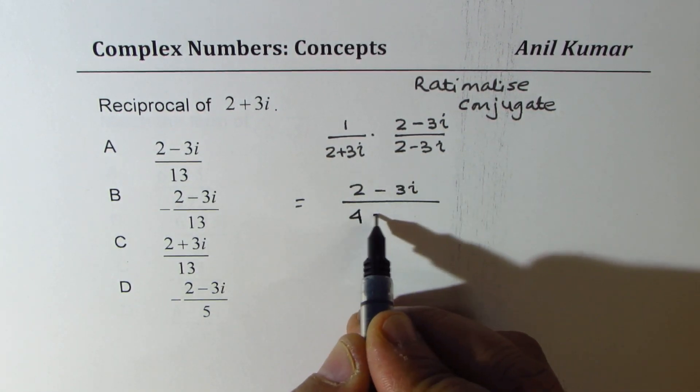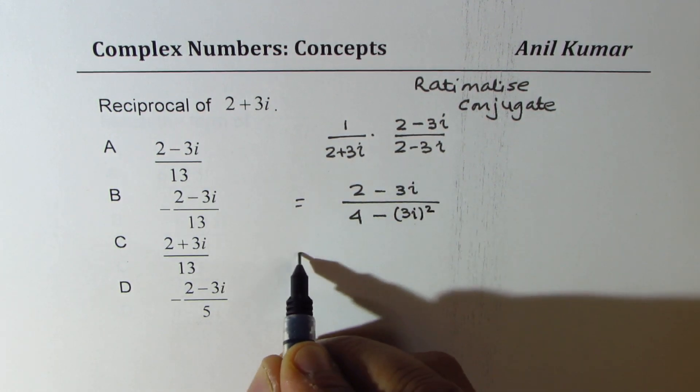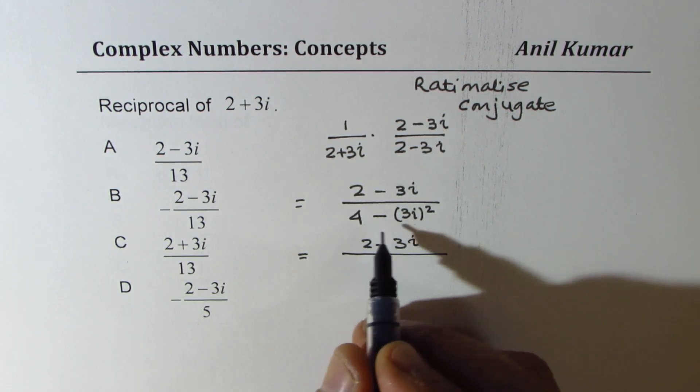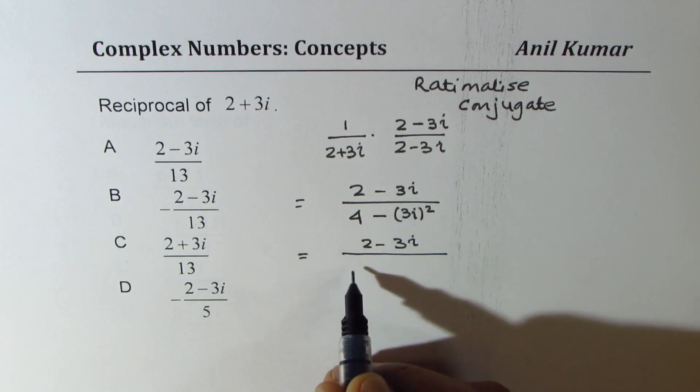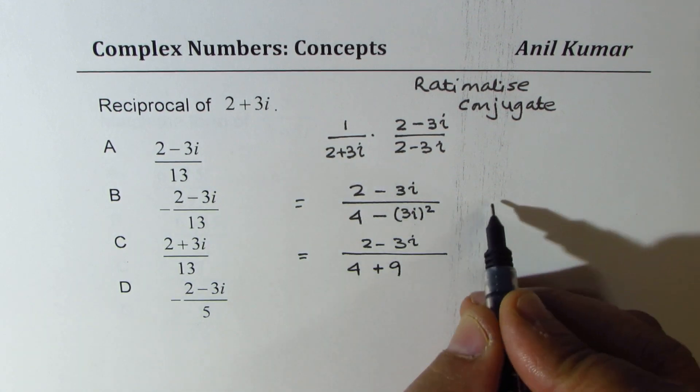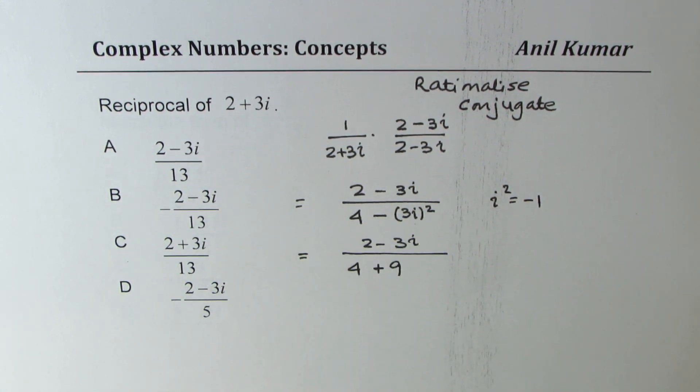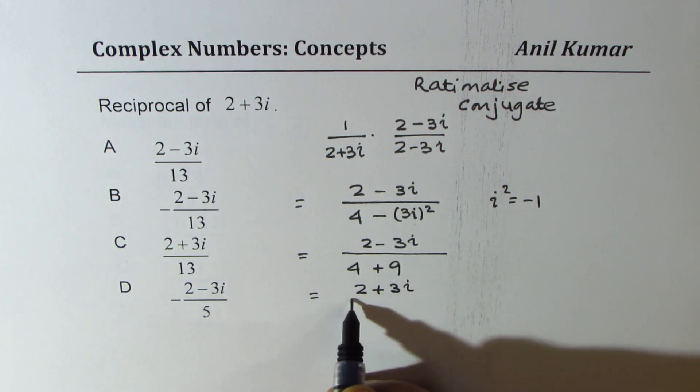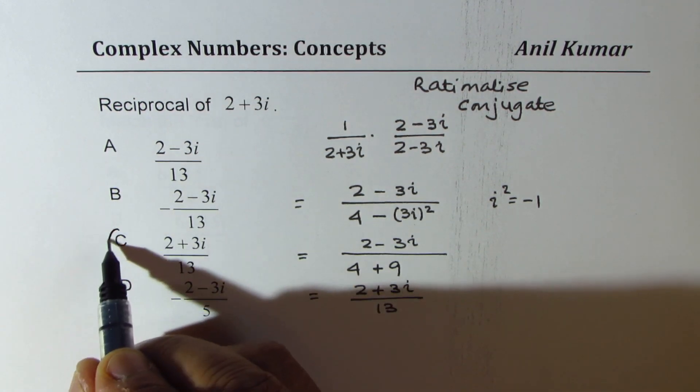Now we get 2 minus 3i. So always when you do conjugate of complex numbers, this actually becomes positive, because i squared is negative. So we get here 4 plus 9, since i squared is negative 1. So that makes this positive. Therefore, the answer is 2 minus 3i over 13. So that is option c for us.